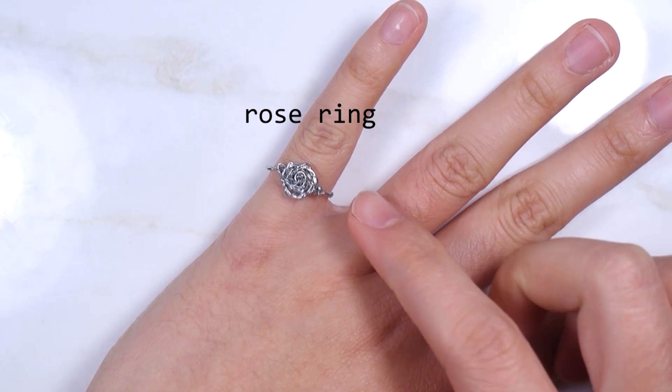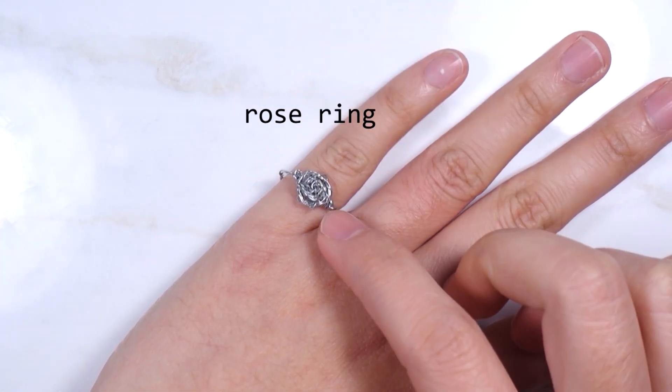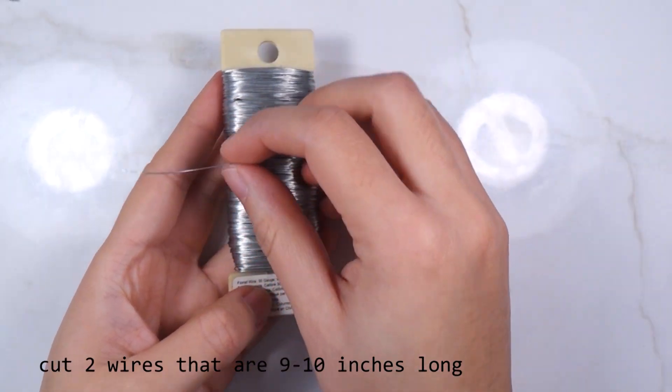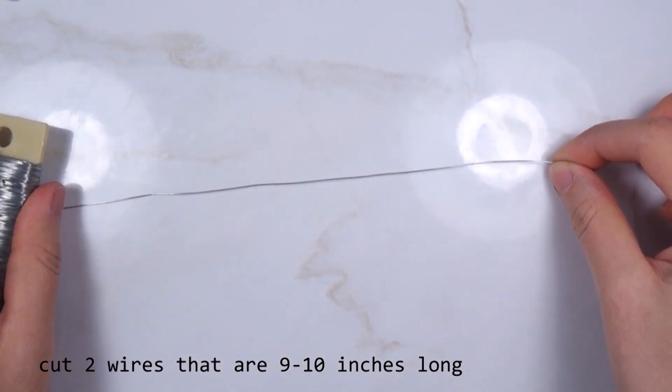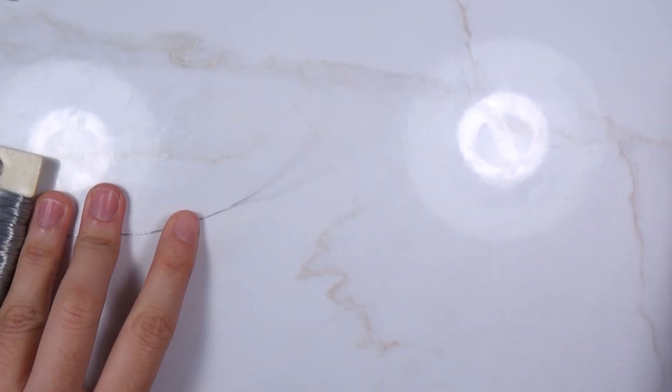We will start with a rose ring. Use 30 gauge wire and cut two wires that are about 9 to 10 inches long. The longer the wire, the bigger the rose.